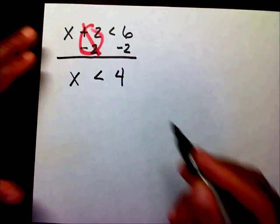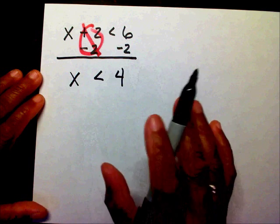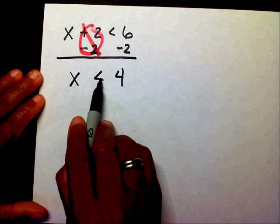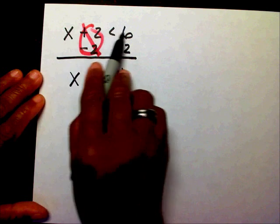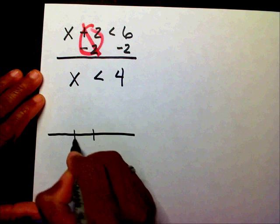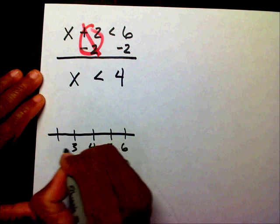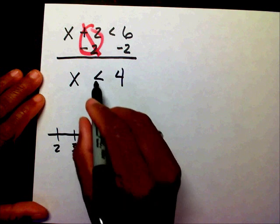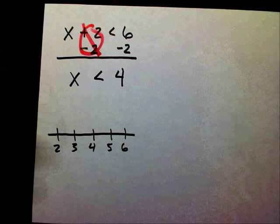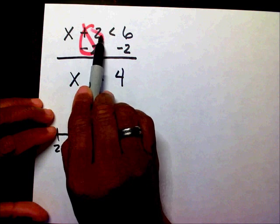x is less than 4 means I can choose any number that's less than 4 — any number less than 4 will make this true. We normally show this on a number line. Now, is 4 included? If I put a 4 in here: 4 plus 2 is 6. Is 6 less than 6? No, it's not.